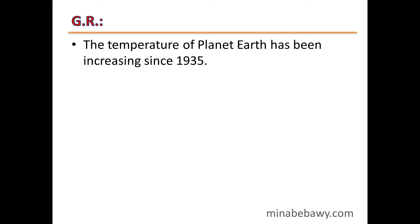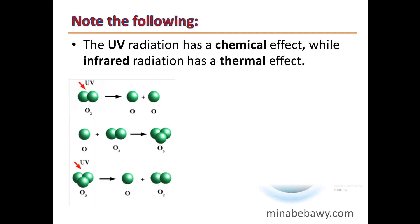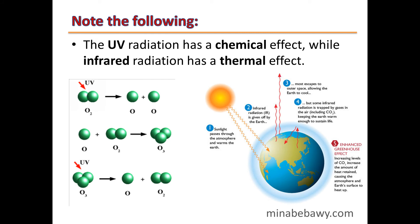Give reason: the temperature of planet Earth has been increasing since 1935. This is due to the increasing of greenhouse gases, especially carbon dioxide. Note: ultraviolet radiation has a chemical effect, playing an important role in forming and destroying ozone molecules via chlorofluorocarbon compounds. While infrared radiation has a thermal effect, as it is the reason for global warming.